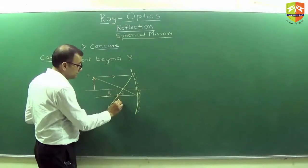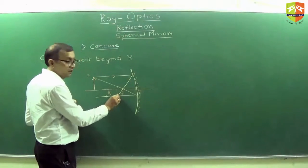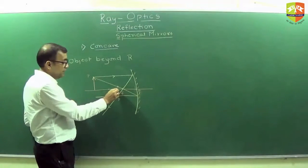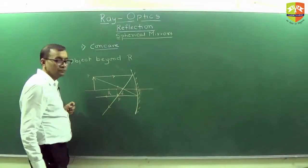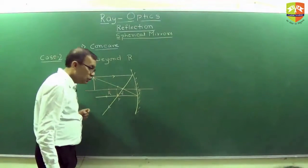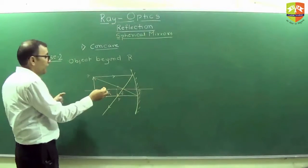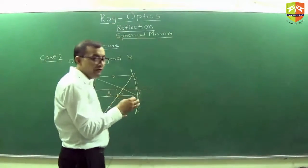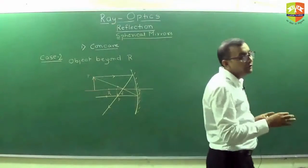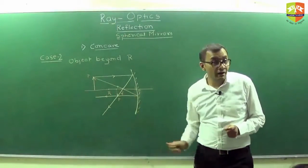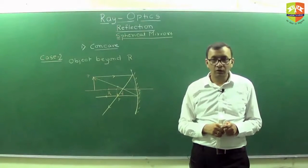Let us say this is point P. So this P becomes P dash, comes here. Are you getting it? So this is the entire image. So this is object beyond R. So wherever you keep the object between infinity and R, the image will be always between R and F.